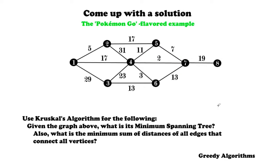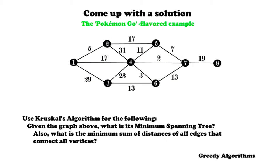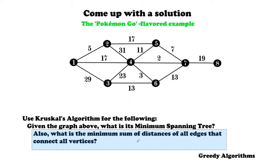Now let's directly apply Kruskal's algorithm to the Pokemon Go flavored example. The question is: given the graph, what is the minimum spanning tree? And what is the minimum sum of distances of all edges that connect all the vertices? If you want to do this exercise on your own first using the step-by-step guide, you should — you would learn a lot from it. For now, I'll go directly into the solution.